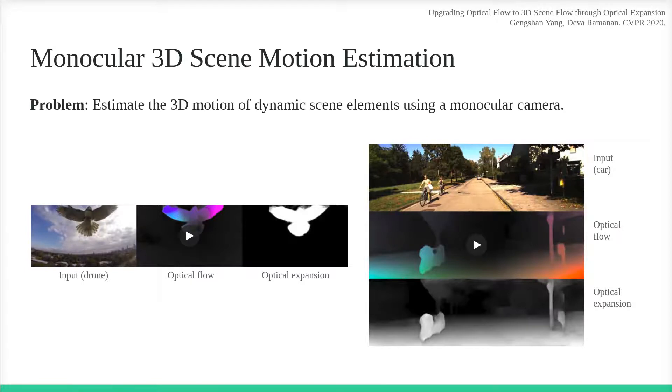Things moving closer will get bigger. In this paper, we propose an approach of upgrading optical flow to 3D scene flow by estimating optical expansion.